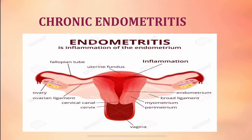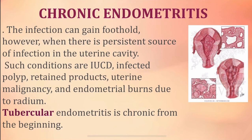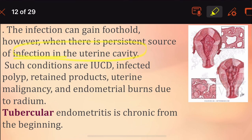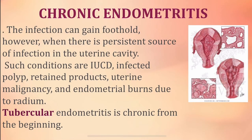Chronic endometritis is a chronic inflammation of the endometrium. Infection gains a foothold when there is a persistent source of infection in the uterine cavity, such as a tumor or polyp. Conditions causing chronic endometritis include intrauterine contraceptive devices, infected polyps, retained products after miscarriage, uterine malignancy, and endometrial burns due to radiation or radium exposure. Any pathology present in the endometrium can result in chronic endometritis associated with polyps and malignancies.